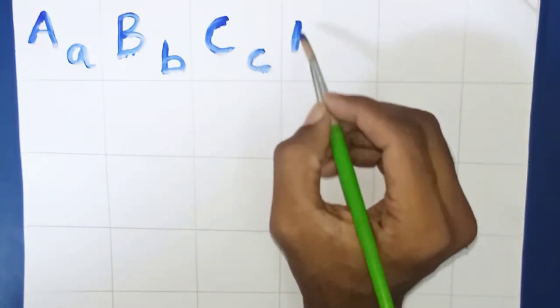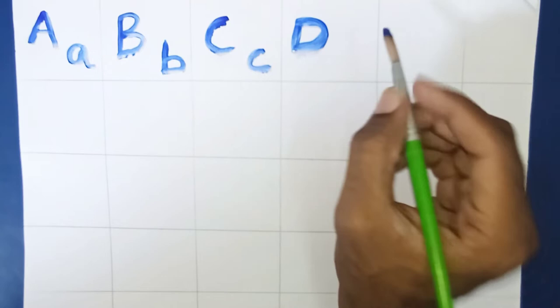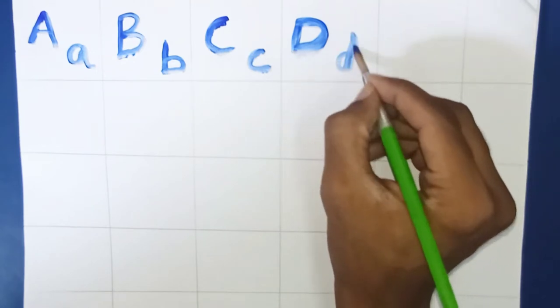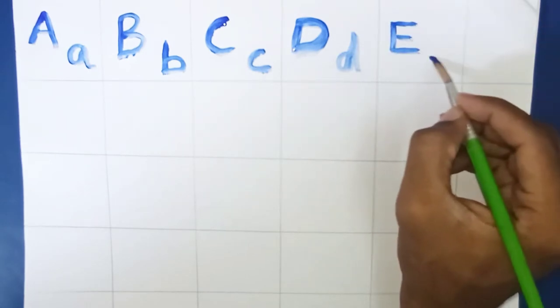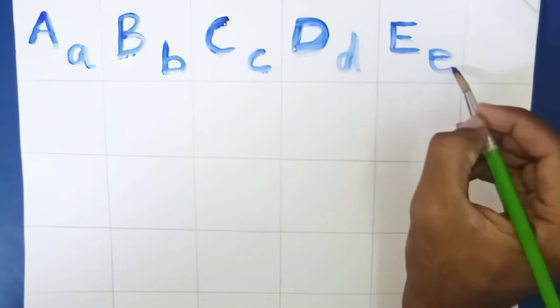D for Dog, D for Dog. E for Elephant, E for Elephant.